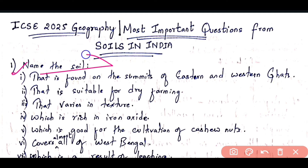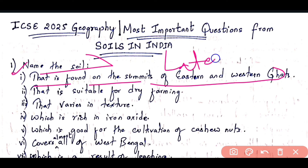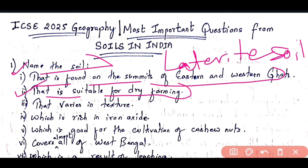The first question is 'Name the following' type. Question 1: Name a soil that is found on the summits of Eastern and Western Ghats. This soil is laterite soil — L-A-T-E-R-I-T-E. Moving to Question 2: the soil that is suitable for dry farming is red soil.